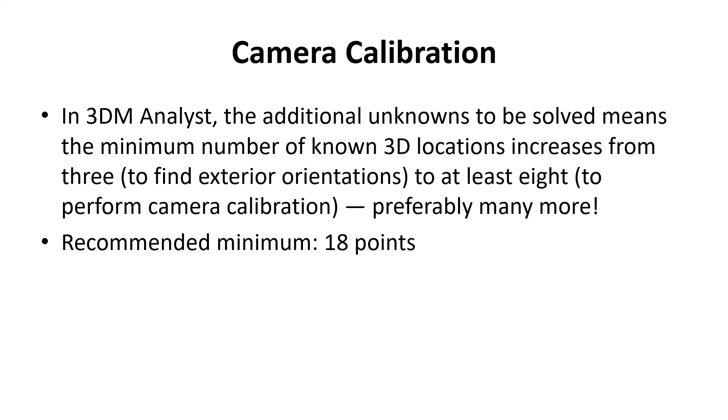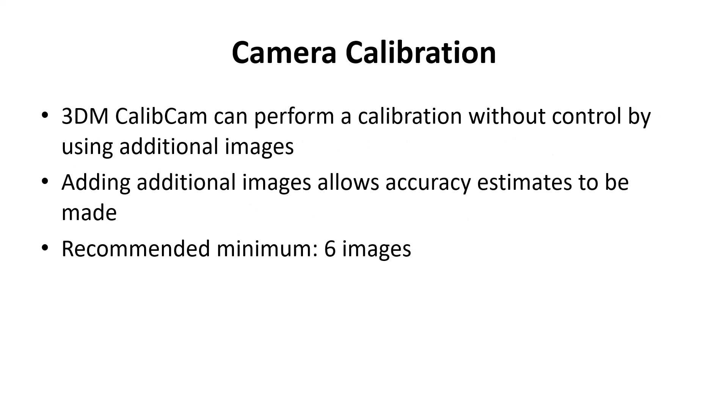In 3DM Analyst, the unknowns to be solved increases to at least eight, or preferably a lot more, to solve for these unknown parameters. Generally we're starting with hundreds of points, not just the minimum 18 to solve for the calibration — the software does that automatically. 3DM CalibCam can perform a calibration of the lens without control by using additional images. Structure from motion software follows the same kind of strategy: by having lots of images of the same object, the processing algorithm will perform a lens calibration, and by having many images, we can not only calculate the calibration parameters and interior orientations, but we can start to make an assessment of their accuracy.